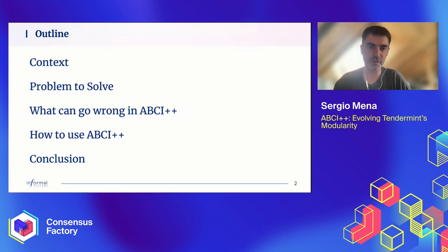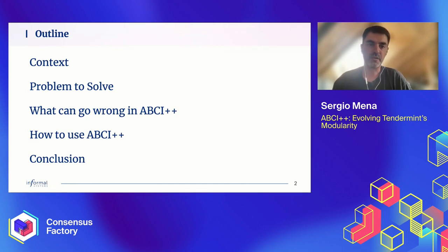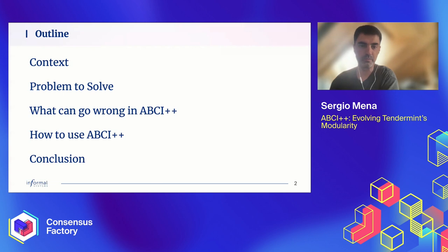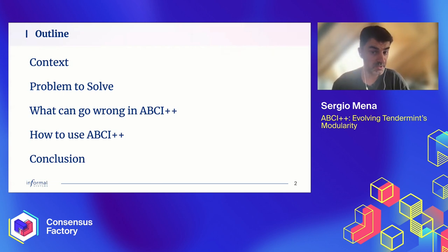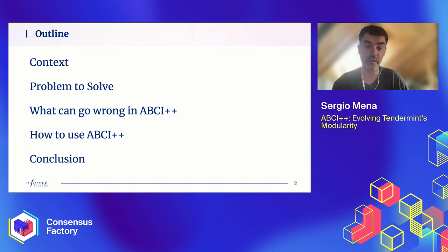This is the outline of my talk. I'll start touching on the context of the work we're doing here, then focus on the problem to solve — the justification for ABCI++ — which is the main focus of my talk. Then we'll get into the details of ABCI++ and what can go wrong there, to then discuss how to properly use ABCI++ so that nothing goes wrong, and then I will conclude.